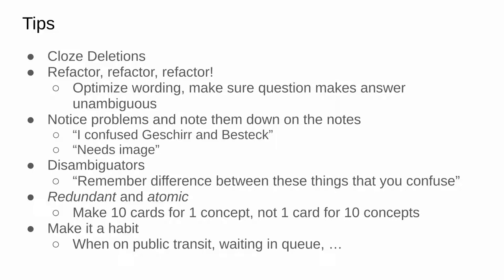Make sure every card asks for exactly one fact to recall. You don't want a card where the front says 'Aristotle' and the back has 50 facts about Aristotle — if you see the word you can't recall all 50 things at once. You want 50 cards, one for each individual thing. When reviewing cards, notice problems: if you always confuse two words, note it down and later go over it and try to fix it.